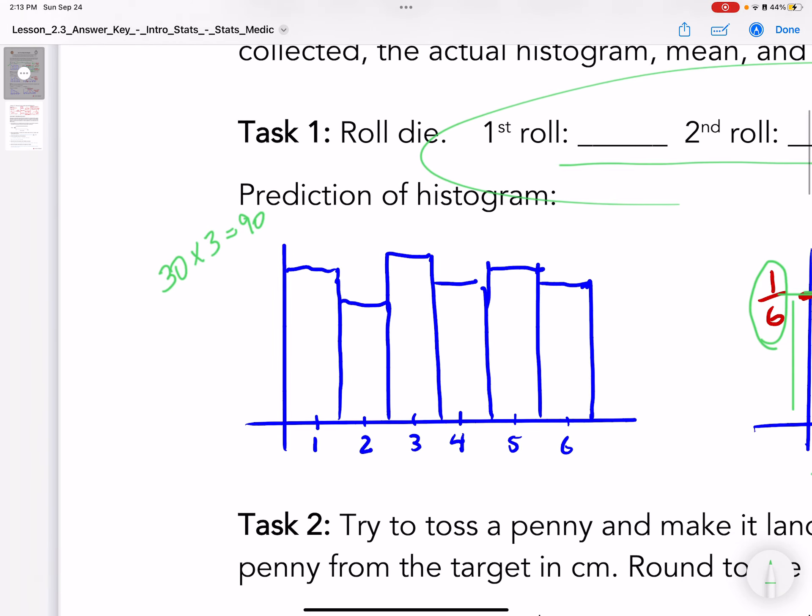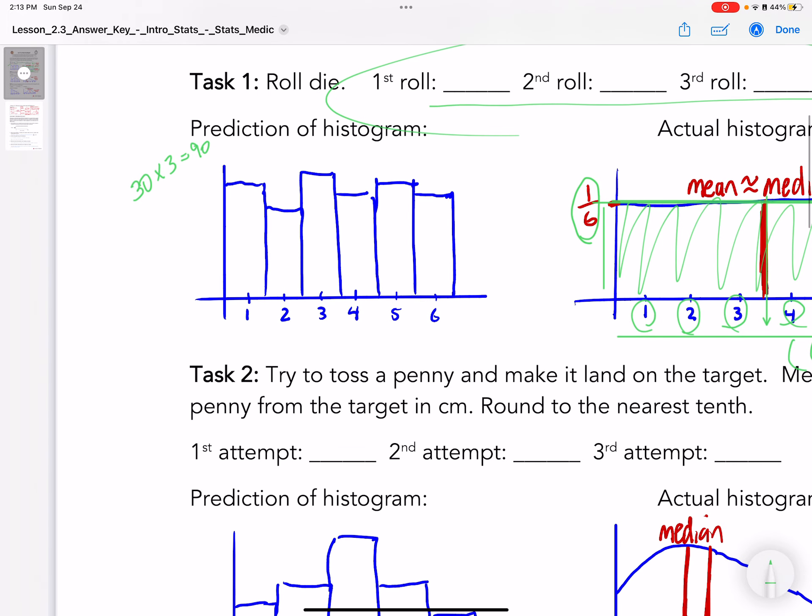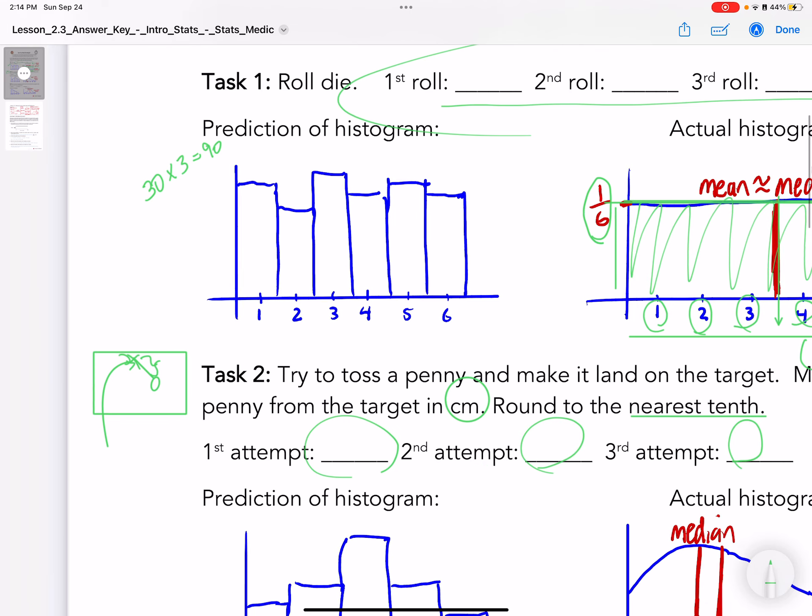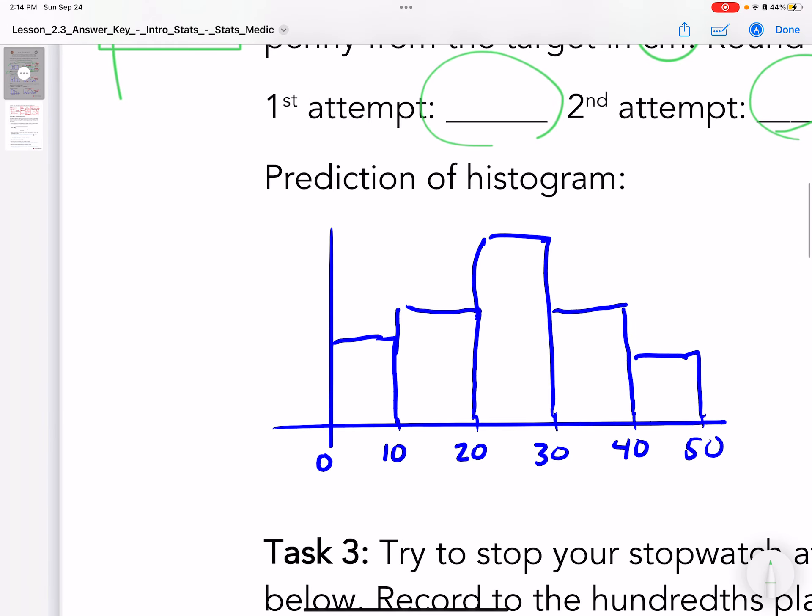The next thing I had them do is toss a penny. I drew an X on everybody's desk and had them attempt to toss a penny right smack on that X. For every one they missed, I had them take a ruler and measure the distance from the X to the penny in centimeters, rounding to the nearest tenth. I had them do it 1, 2, 3 times.